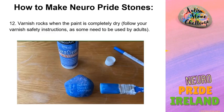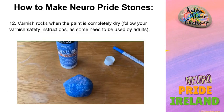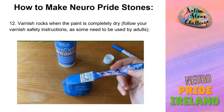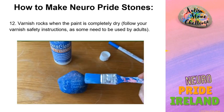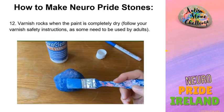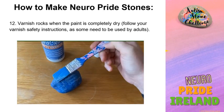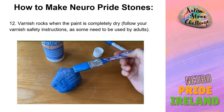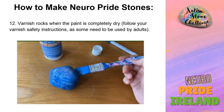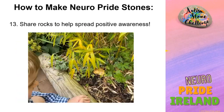Varnish your paint on the rocks when the paint is completely dry. There are different types of varnish to use. If you're using a spray varnish, just note that this has a strong smell and will need to be done by adults in a well-ventilated area. Share your rocks to help spread positive awareness about neurodiversity. Please check your local COVID guidelines before releasing them into the community.